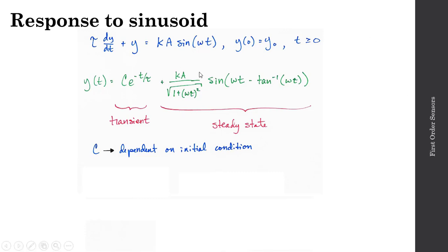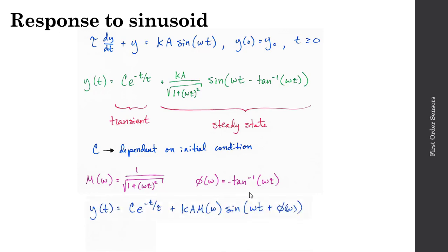I can rewrite this magnitude term as capital M of omega, where M of omega equals 1 over the square root of 1 plus the quantity omega times tau squared. And I can rewrite the phase component as phi of omega, equal to minus the arctan of omega times tau. This allows me to write a condensed version: y of t equals c times e to the minus t over tau, plus k times a times M of omega times sine of omega t plus phi of omega. Both the magnitude ratio and the phase shift are dependent on frequency omega.